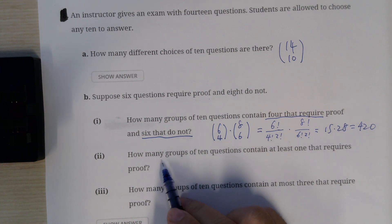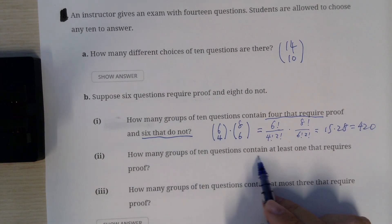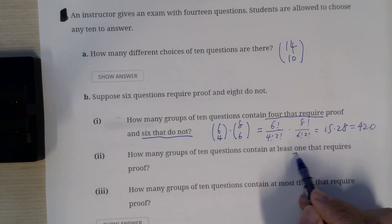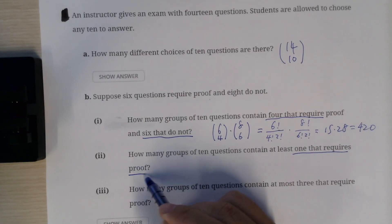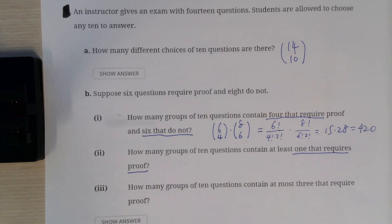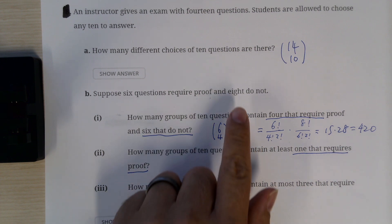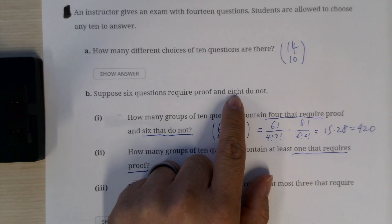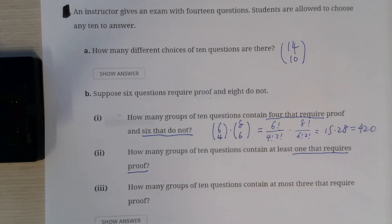The second part is how many groups of 10 questions contain at least one that requires proof. So let's look at this problem again, at least one.